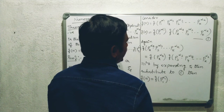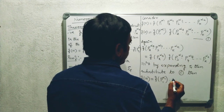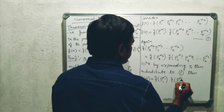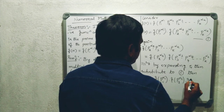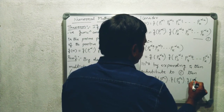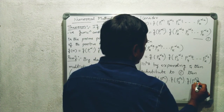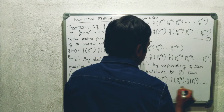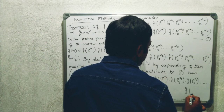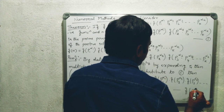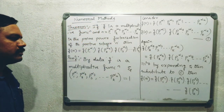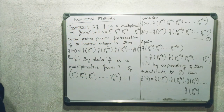f of n is equal to f of p1 to the power of alpha 1, into f of p2 to the power of alpha 2, into f of p3 to the power of alpha 3, and so on, into f of pk to the power of alpha k. Hence the result is proved.